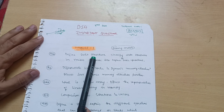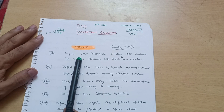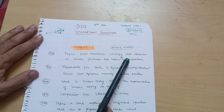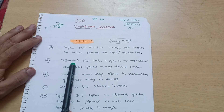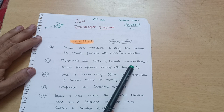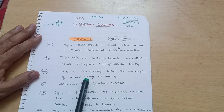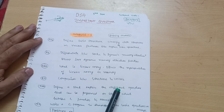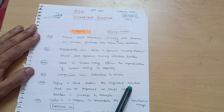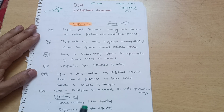First, the definite question - this is the most frequently asked question in the VTU examination: define data structure, classify data structures in various ways, and explain basic operations. Next possible question will be differentiate between static and dynamic memory allocation, discuss dynamic memory allocation functions. What is a linear array, discuss the representation of linear array in memory, and comparison between structures and unions. Also define a stack and explain the different operations that can be performed on stacks with suitable C functions and examples.